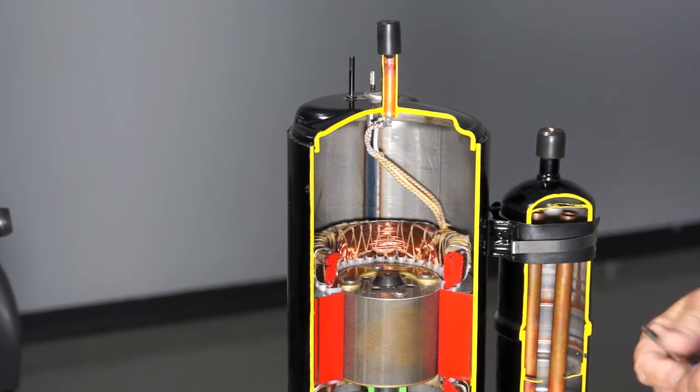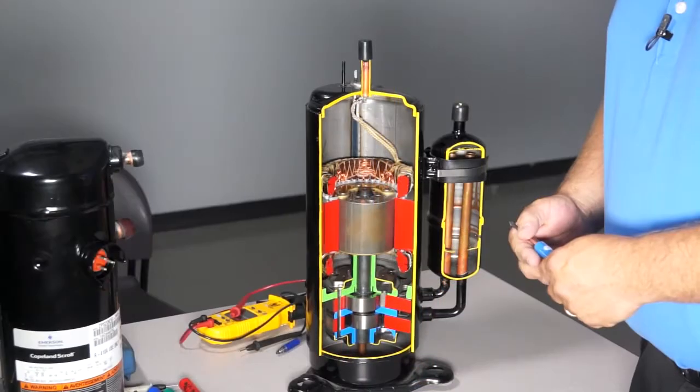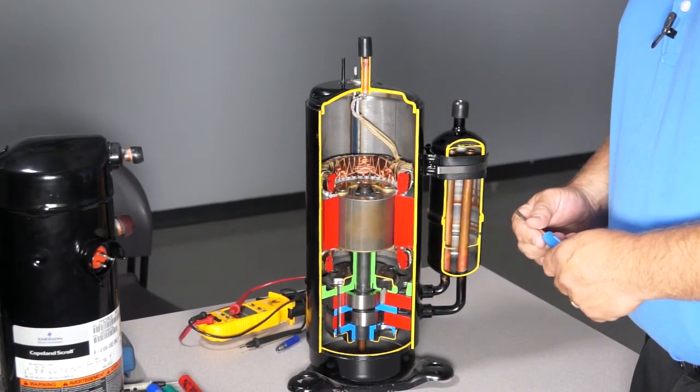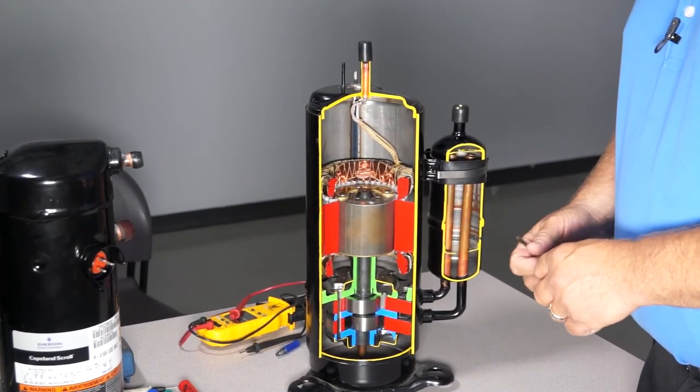If you're tripping the circuit breaker, you probably have either a grounded or shorted compressor winding. If it's tripping the overload, then it's possible that the compressor is physically locked up and the motor just can't turn.